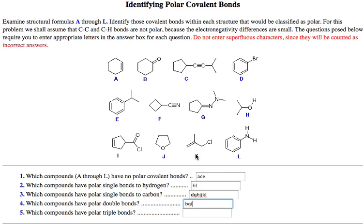For K, we have a double bond, but there's no heteroatoms involved, that's just a carbon-carbon double bond. That won't work. And that covers all things with polar double bonds.